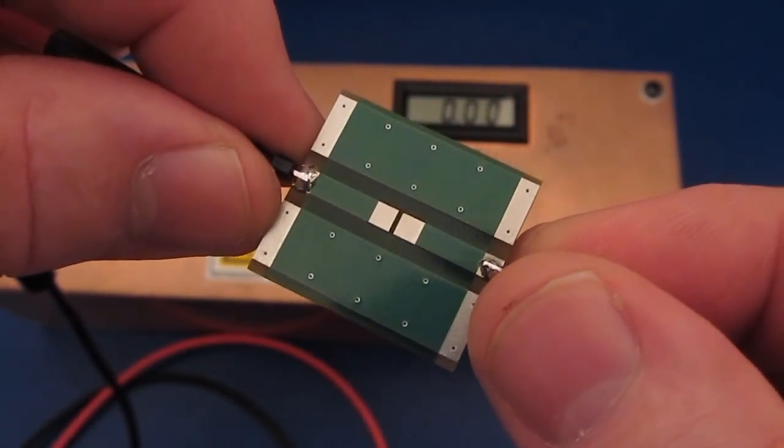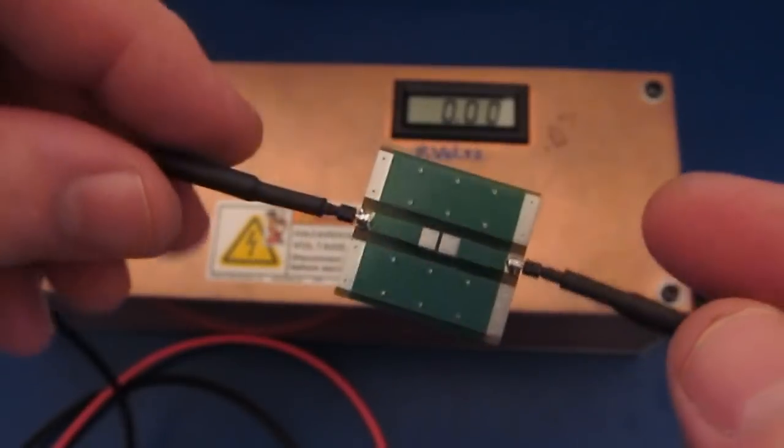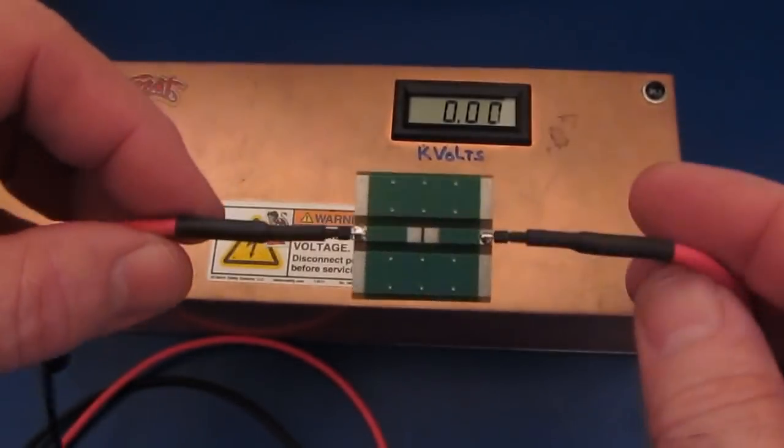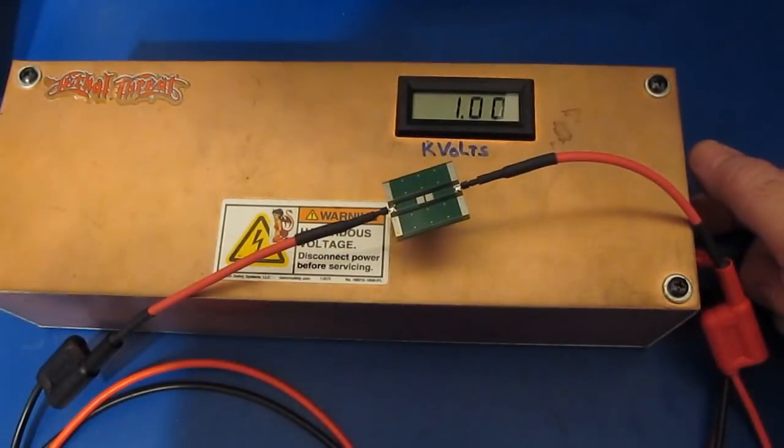This is one of the boards that we're going to be using today. What I'd like to do is check to see where this thing breaks down. There's 1,000 volts, there's 2,000 volts, and it broke right there.